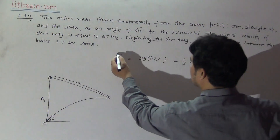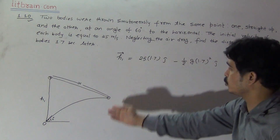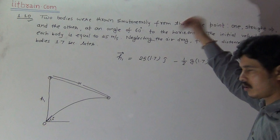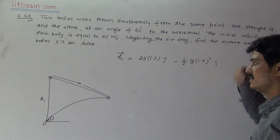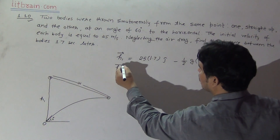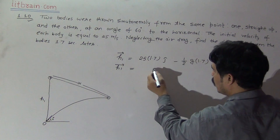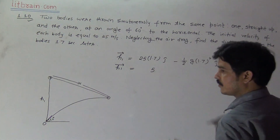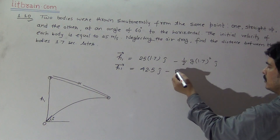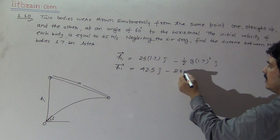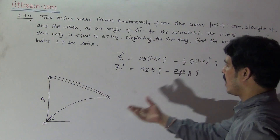So h1 = 25j·t − (1/2)g·t²·j. Substituting t = 1.7 seconds: 25 × 1.7 = 42.5j, minus (1/2) × 9.8 × (1.7)² = 2.89/2 × g in the j direction. This gives the total height covered by the first particle in 1.7 seconds.